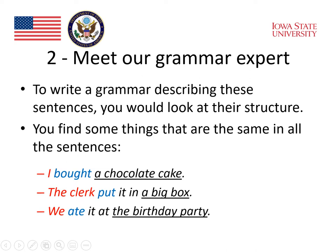I refers to the speaker in the first sentence. Clerk refers to the person in the store. We refers to me and somebody else in the third. The second thing that I find in common is that each one has a verb — a word that says we did something: bought, put, and ate. The verbs are in blue.